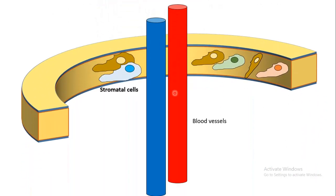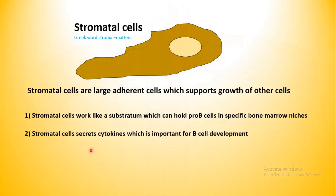In the endosteal niche, there are certain cells known as stromal cells. These stromal cells play a crucial role in B-cell development. The stromal cells are actually supportive cells and they are large adherent cells. The Greek word stroma means matter. The stromal cells work like a substratum which holds the pro-B cells in a specific niche and also influences their development by secreting several cytokines which are very important in B-cell development.